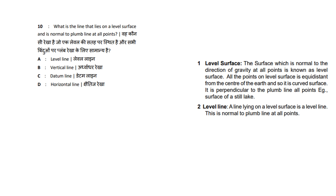Question 2: What is the line that lies on the level surface and is normal to the plumb line at all points? The answer is the level line. The answer is option A.